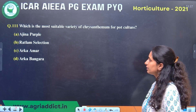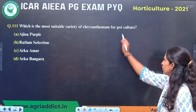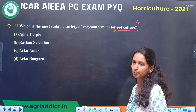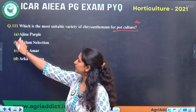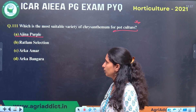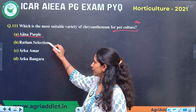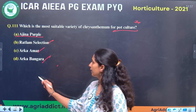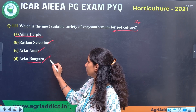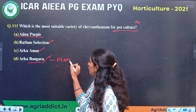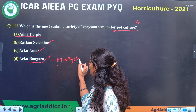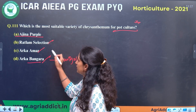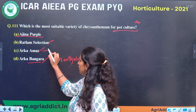Which is the most suitable variety of Chrysanthemum for pot culture? This is a repeated question type, but with different variety options. Anjana Purple is the pot culture variety. Note that Arka Bangaram is not a variety of chrysanthemum — it is a variety of marigold. Other options listed included gladiolus varieties, which should be eliminated.